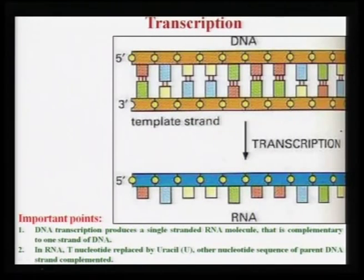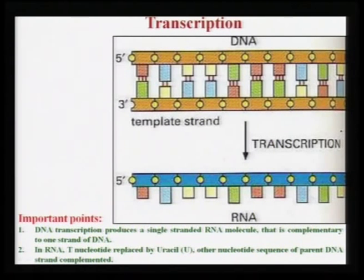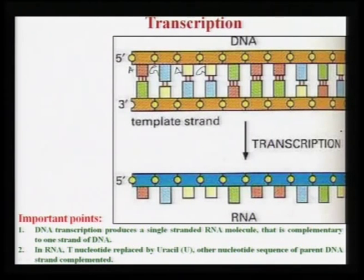RNA further undergoes translation to produce protein. The flow of genetic information goes from DNA to RNA to protein in living cells. In the transcription process, you have a single strand, and bases can be A, G, or whatever sequence exists.